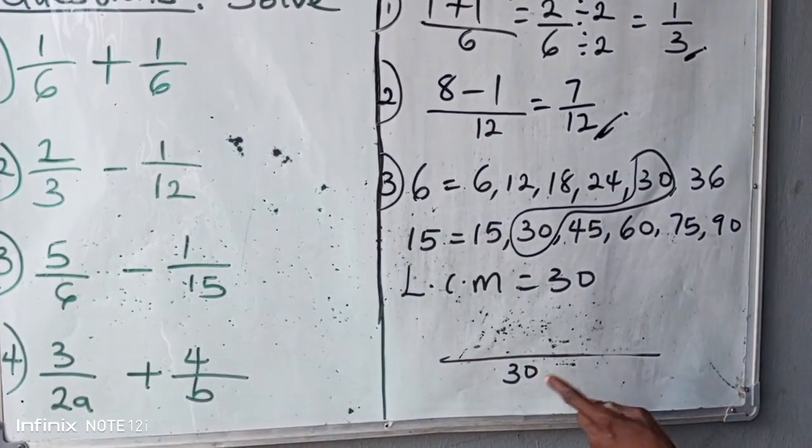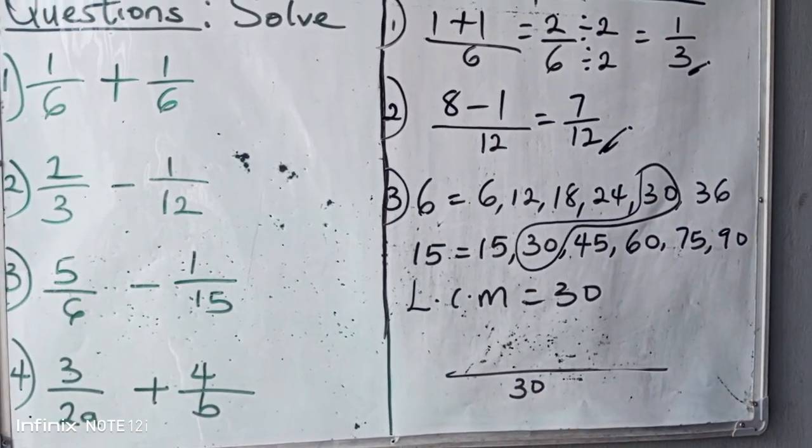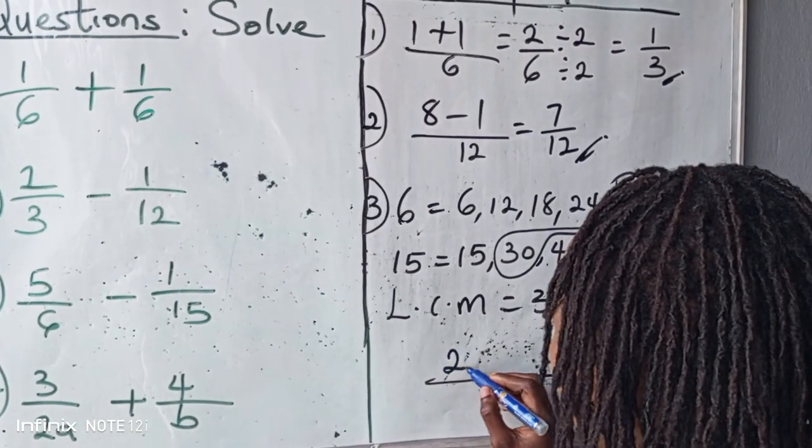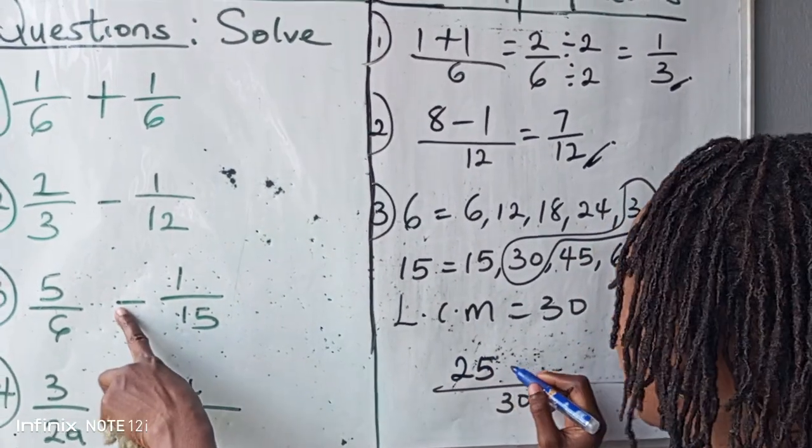Now draw a big line and put your thirty there. How many six can you find in thirty? Five. Five times five will give you twenty-five. Put your negative sign there.